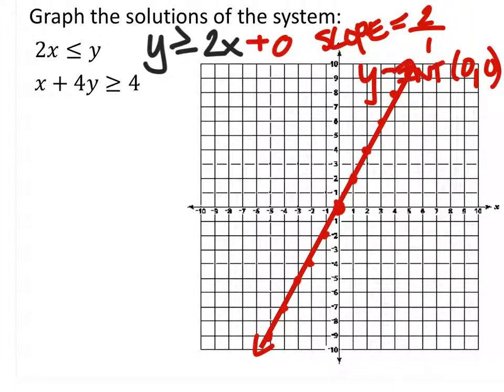Since this line goes through the origin, we can't use that as a test point. What point do you guys want to use? 2, 2. 2, 2. Alright, so 2, 2 is right here, this is our test point.